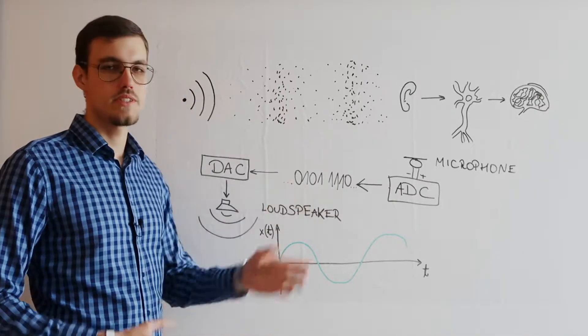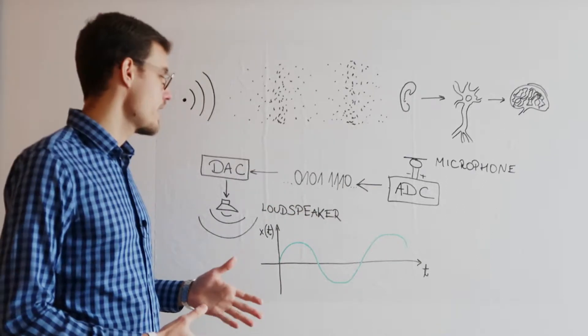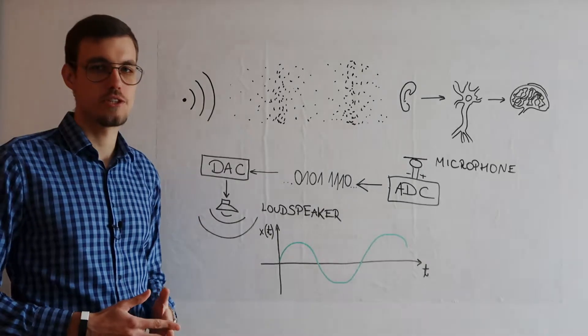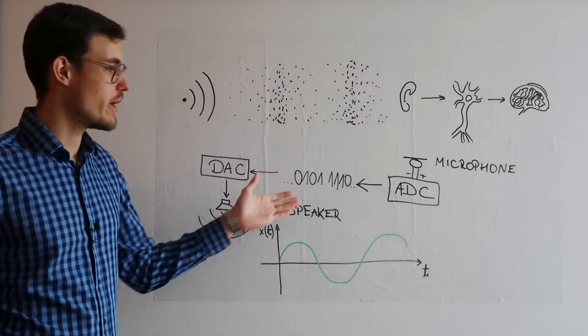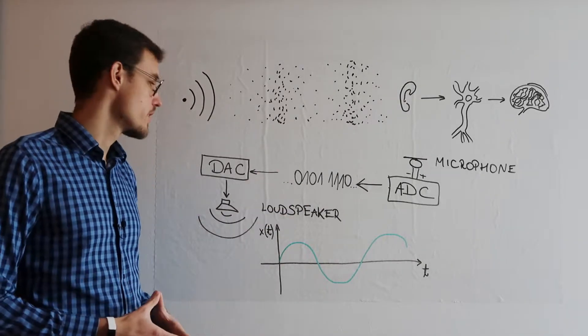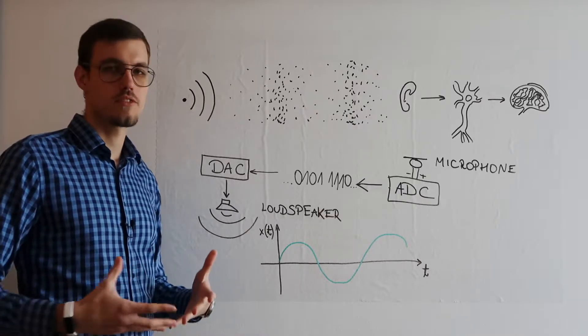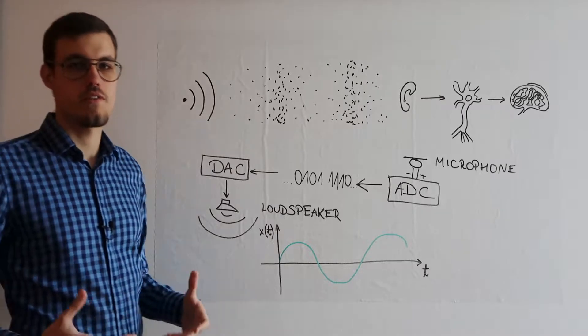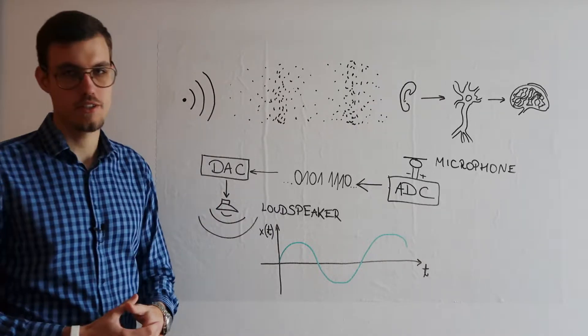These binary numbers can be somehow processed and then can be output to a digital-to-analog converter which changes this binary representation here to again an analog representation in terms of voltage. This voltage then steers the loudspeaker.